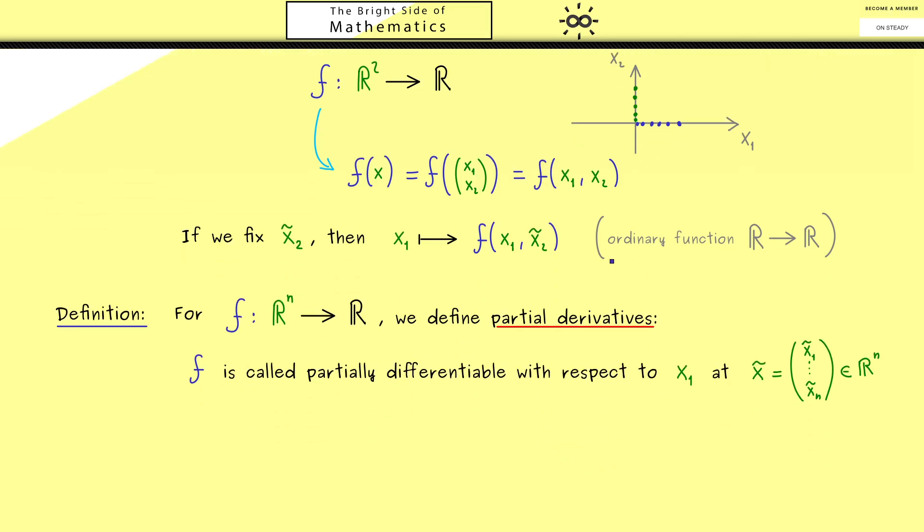It should simply be the differential quotient of this ordinary one-dimensional function. This means we look at the difference of f at x₁ tilde plus h minus f of x₁ tilde. And of course, we know all the other variables should be fixed. Hence there is no h involved there. Okay, so we have this difference here, the difference in the value. And then, as usual, we have to divide this by the difference of the input, which of course is simply h. And then when we send h to 0, and if this limit exists, we have our derivative.